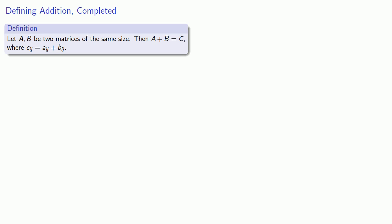And so this suggests the following definition of addition of two matrices. Let A and B be two matrices of the same size. Then A plus B is going to be the matrix C where the components of C are the sum of the corresponding components of A and B. And like vector addition and vector equality, we're going to define matrix addition using component-wise addition.